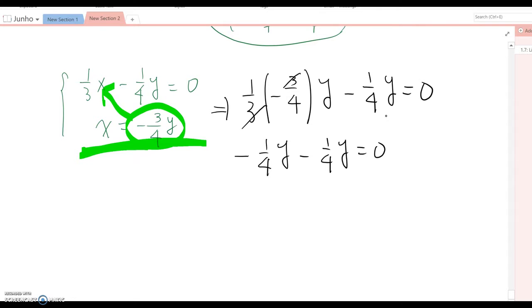Now, if you don't like fractions, please multiply by the common denominator, which is 4. Then this becomes negative y minus y equal to 0.